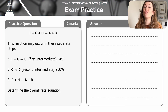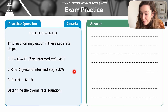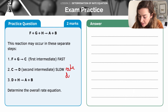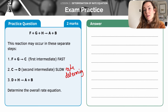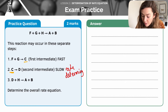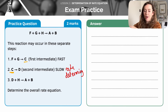Here's a worked example — pause the video if you want to give it a go, but I'll work through it after. In this reaction we can see that step 2 is the slowest step, so this is the rate determining step. Step 1 is faster than step 2, however step 2 depends on the product of step 1.